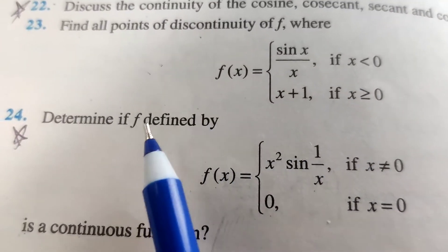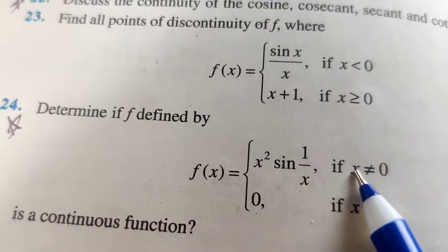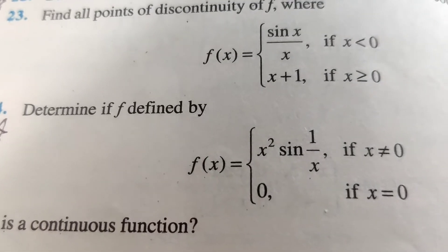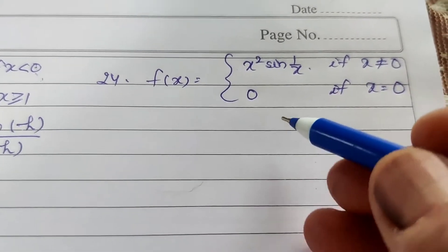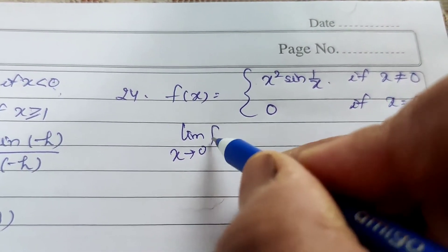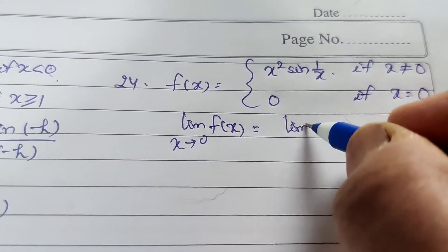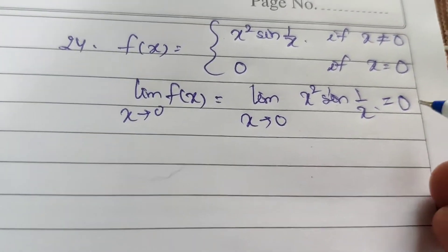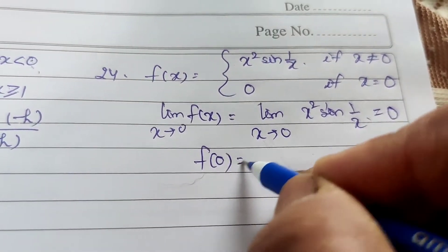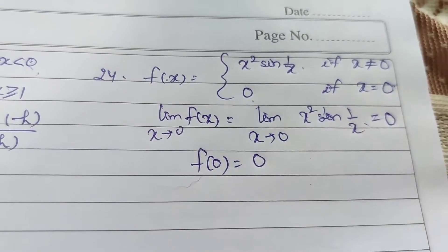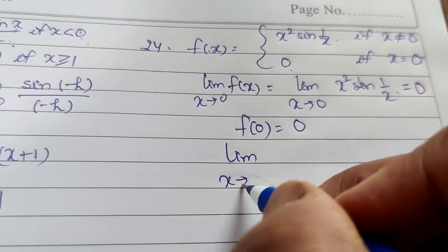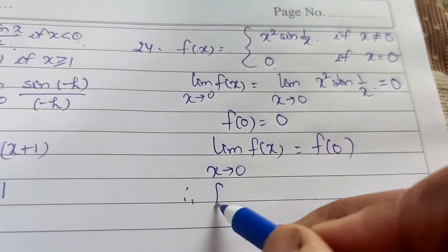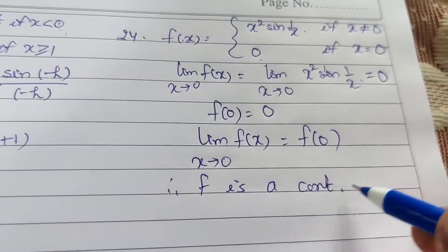Question number 24. Determine if f defined by f(x) = x² sin(1/x) if x ≠ 0, and 0 if x = 0, is a continuous function. The limit as x tends to 0 of the function equals 0. When x equals 0, the value of the function equals 0. Since the limit equals the function value, the function is continuous at x = 0. Therefore f is a continuous function.